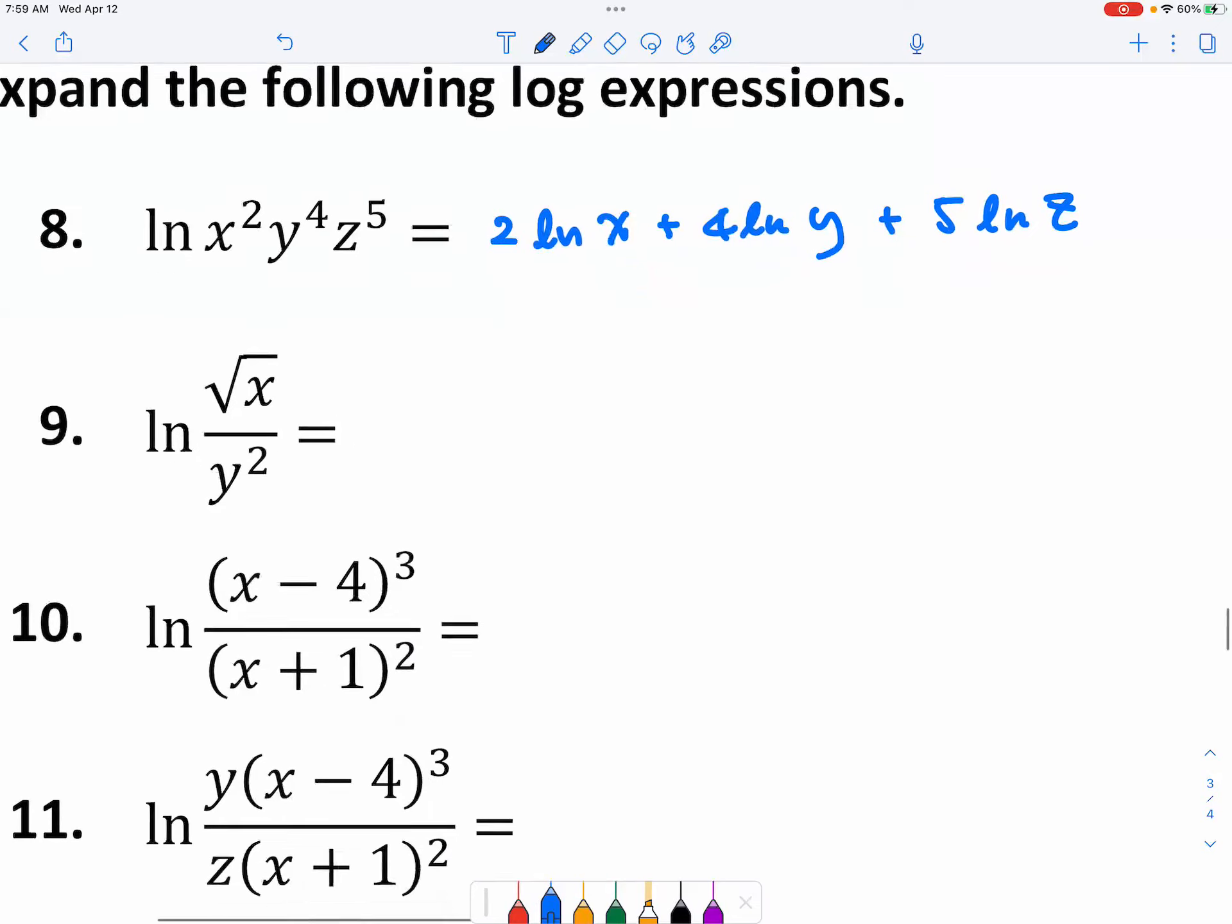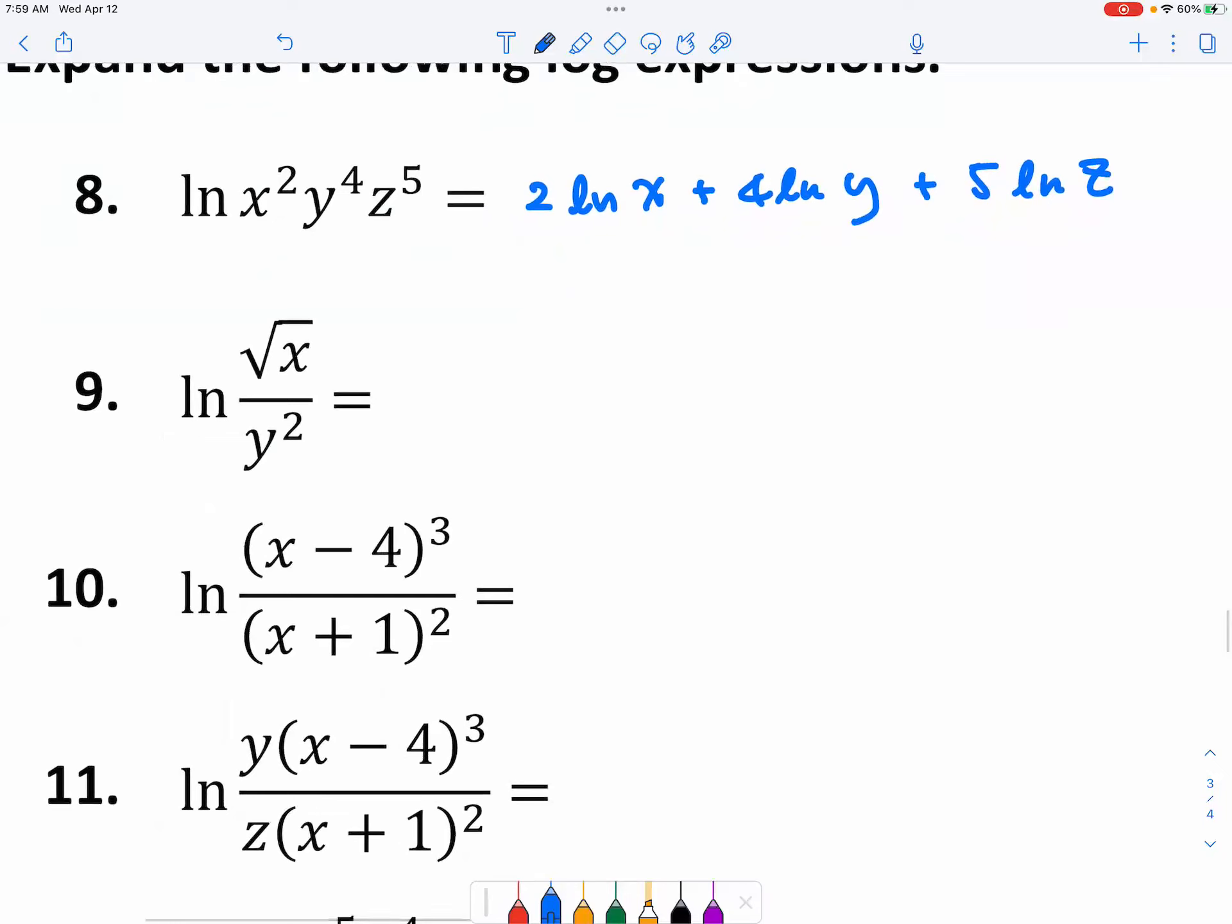Number nine. Well, you have a numerator and a denominator. So you have 1/2 ln(x) because x to the one half power is square root of x, minus 2 ln(y). That should be easy.